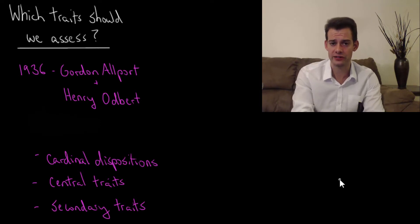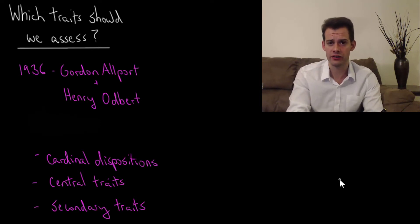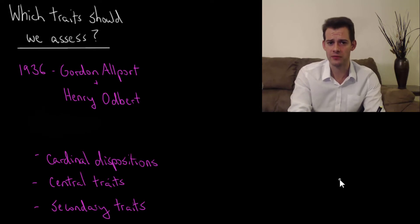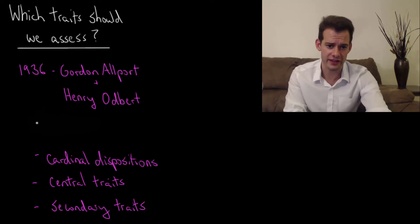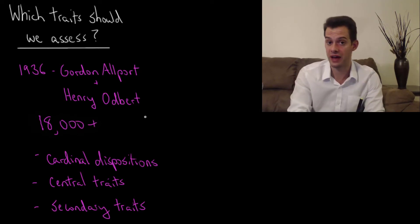In the 1930s, Gordon Allport and Henry Odbert looked through dictionaries and pulled out all of the terms that they thought could refer to personality. Based on this they came up with a list of over 18,000 words that could be used to describe someone's personality.